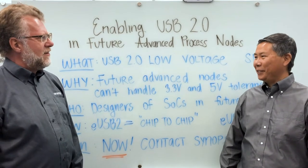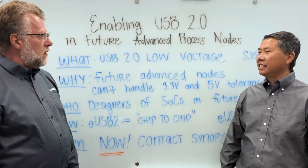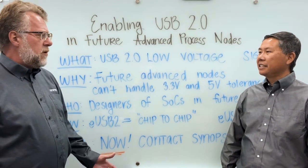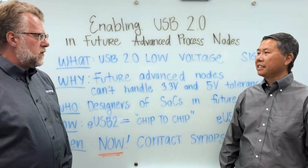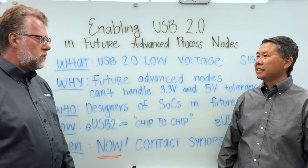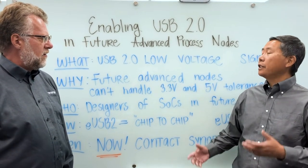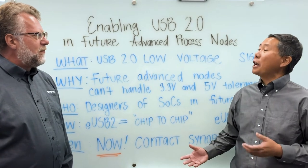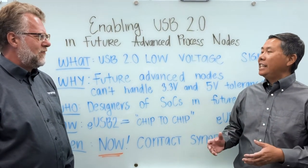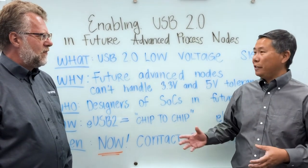What is eUSB 2? It's a lower voltage version of USB 2. USB is 25 years old now, and 3.3 volt signaling with 5 volt tolerance was okay 25 years ago, but today in the advanced process nodes that are used for the most advanced chips, it's just not doable. Those are the target designers that would want to use eUSB 2 — the designers needing USB 2 connectivity in the most advanced process nodes.